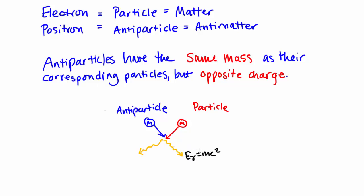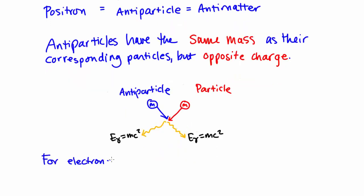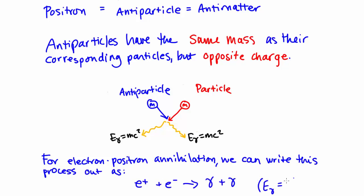E equals mc squared is Einstein's famous mass-energy equivalence equation. We can write this process out for an electron-positron annihilation as E plus plus E minus goes to two photons. Each photon, in this case,